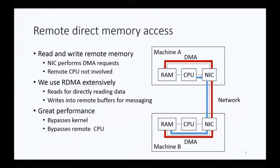This basically removes the CPU from the path of serving the data, which improves performance. FARM uses RDMA extensively — we use RDMA reads to read data from memory of remote machines, and we use RDMA writes to implement a very efficient messaging layer. RDMA gives us great performance because it bypasses the kernel so we can access the NICs directly, and it also bypasses the remote CPU, which further improves performance.